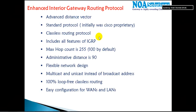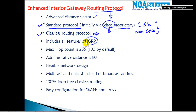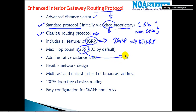The next protocol we'll be discussing after RIP is EIGRP. EIGRP is one of the most commonly used protocols. It's also called an advanced distance vector protocol or a hybrid protocol — that's generally how Cisco refers to it. It's no longer proprietary; it was developed by Cisco but has since been made a standard protocol, so you can run it on Cisco as well as non-Cisco devices. It supports classless routing, carrying subnet mask information, and includes all the features of IGRP, since EIGRP was a later modification of IGRP. The maximum hop count is 255, with a default of 100, but you can change it from 100 to 255.